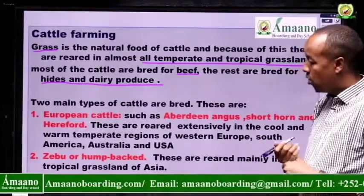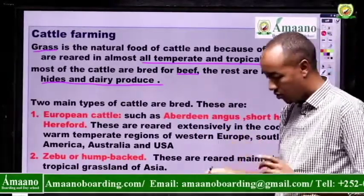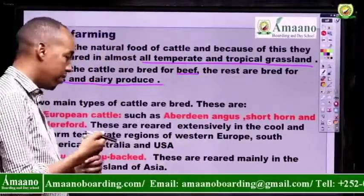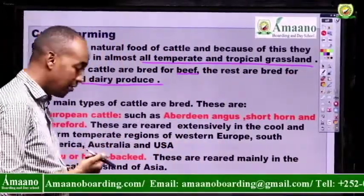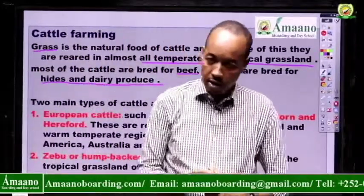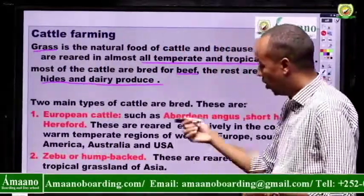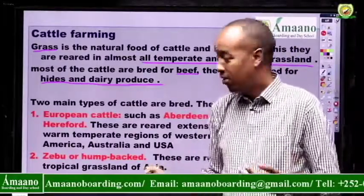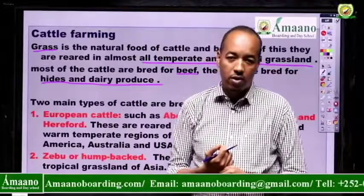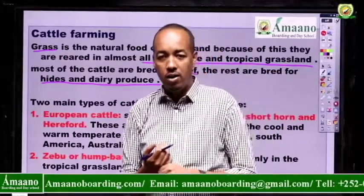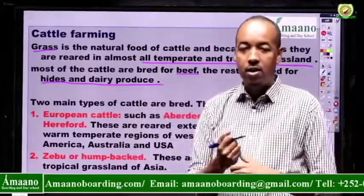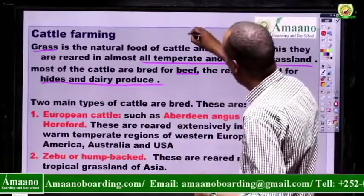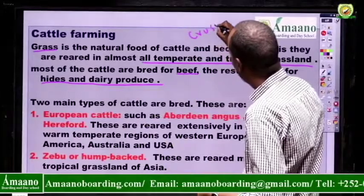The second breed is called Zebu or the humpbacked one. This is the one that is common for us. Ours are Zebu or humpbacked cattle. These are reared mainly in the tropical grasslands of Asia and Africa. There is also another type now called crossbred cattle. These two breeds have been mated and genetically modified together, resulting in a third type called crossbred cattle.